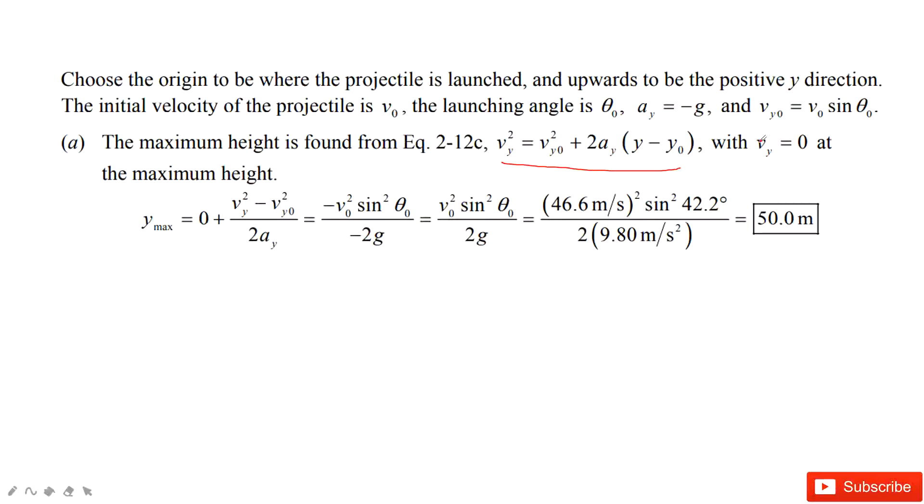There, we can say Vy is 0, and Vy0, this is V0 sin theta. And the acceleration is negative g. And Y0 is 0. So then we can solve this equation. We find the y at the maximum is just equal to this equation. And then we input numbers. Everything is solved.